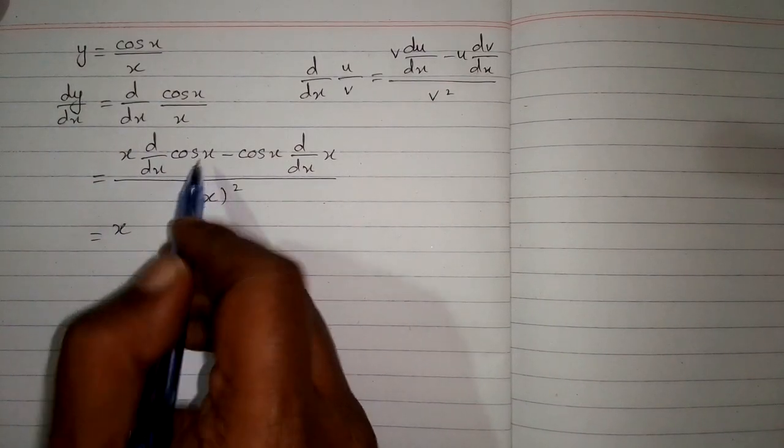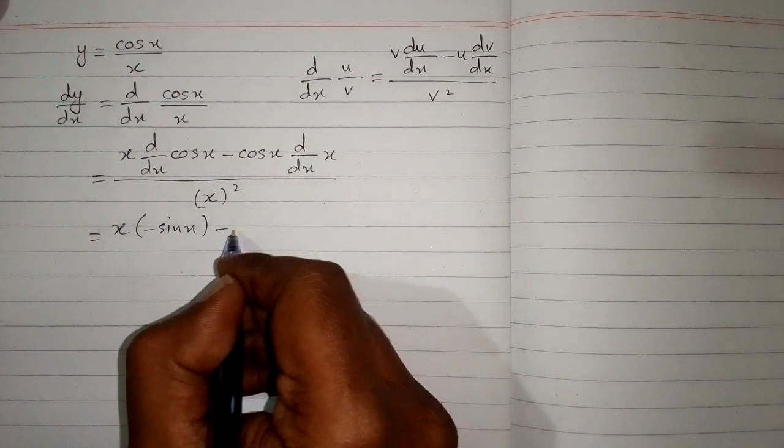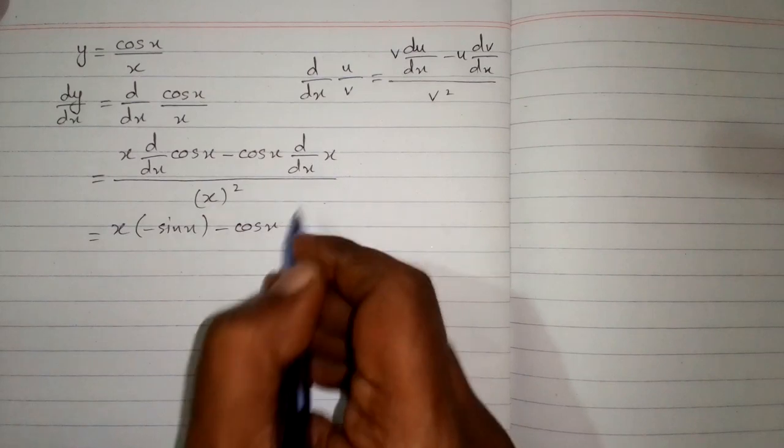Now the derivative of cos x is minus sin x, and the derivative of x is 1.